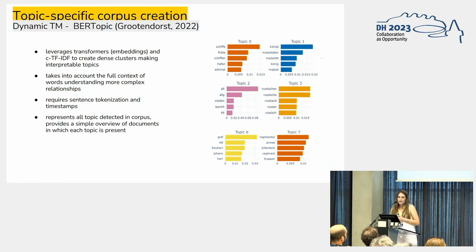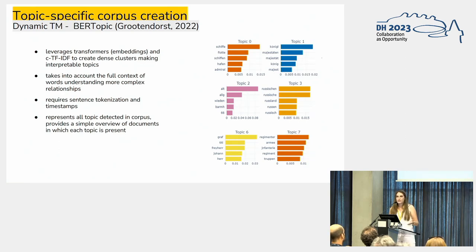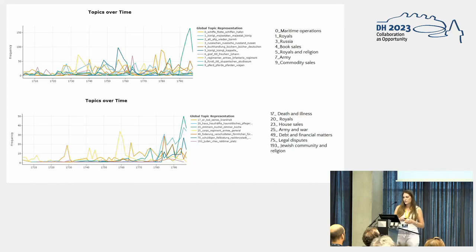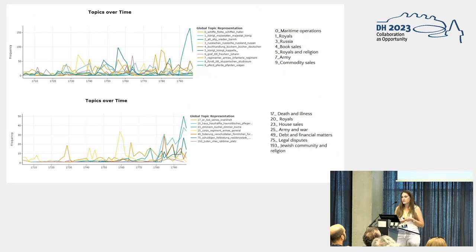With BERTopic we're able to represent all topics detected in the corpus. We have a simple overview of all documents in which each topic is present, and we can also input a specific document and check whether a certain topic is present in it. In the first temporal graph we see the ten most frequent topics and how they develop over time. The most frequent topic — ships — appears throughout the whole century. Commodity sales spike at the end, when ads for selling houses began appearing in the newspapers. There is also a spike for army and infantry topics in the 1780s.